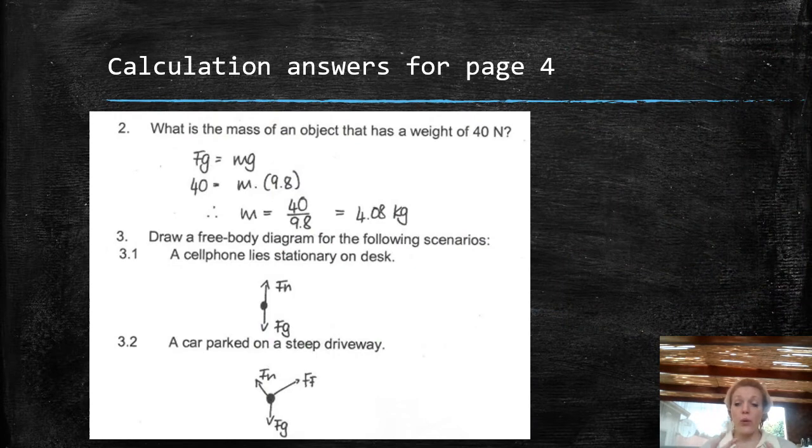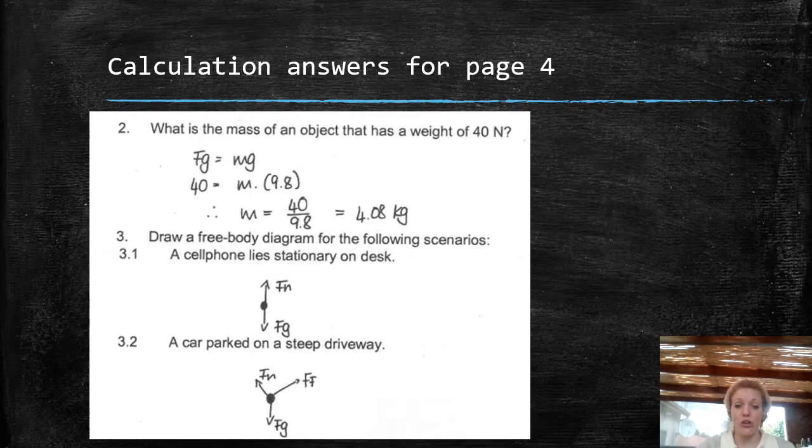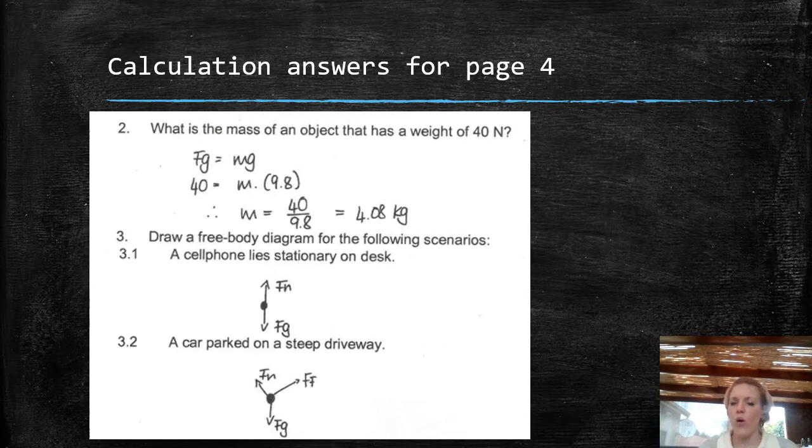So I'm going to work very quickly through these examples, so please make sure that you mark your work, make sure that you understand exactly what's going on, and I'm going to try and mark with you. So one of the first things that you need to look at is question two, because we did question one in the previous video, and that is what is the mass of an object that has the weight of 14 newtons?